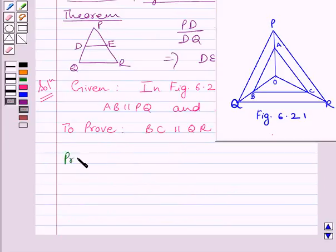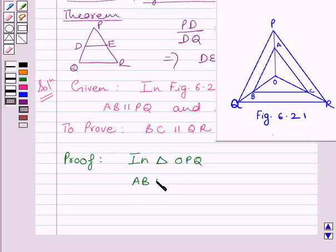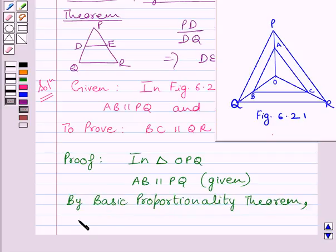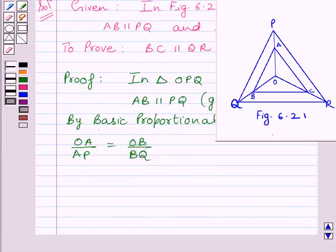Now let us start the proof. First of all, let us consider triangle OPQ. In triangle OPQ, AB is parallel to PQ. This is given in the question. So by the Basic Proportionality Theorem, we get OA upon AP is equal to OB upon BQ. Let us name this expression as 1.